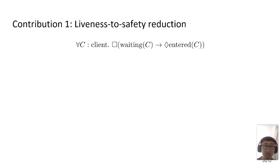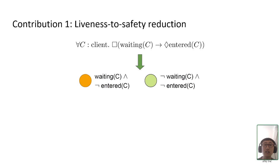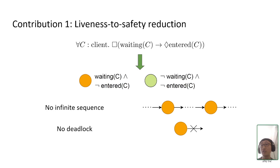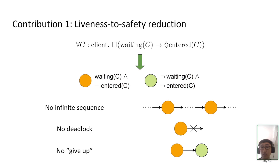Our first contribution is a reduction from liveness to safety. Consider the liveness property for ticket lock — we show it suffices to prove a set of simpler properties. Let an orange circle denote a protocol state where client C is waiting and has not entered, and a green node represent a state where C is neither waiting nor entered. We need to rule out three situations: an infinite sequence where C keeps waiting without ever entering; a state where no transition is possible while C is still waiting (deadlock); and a situation where C stops waiting without ever entering — it just gives up.